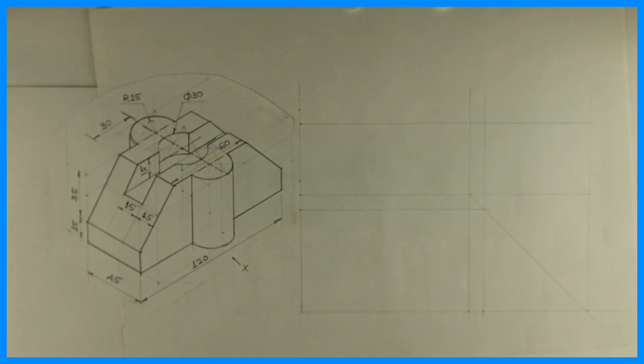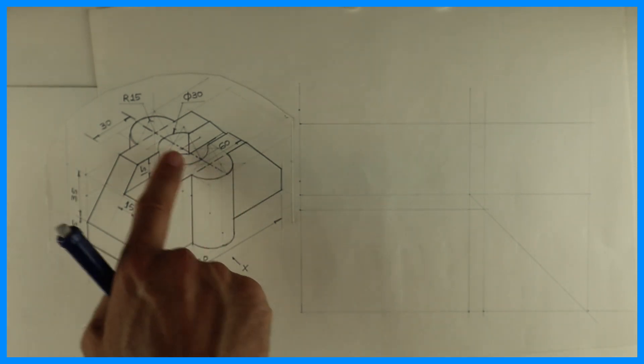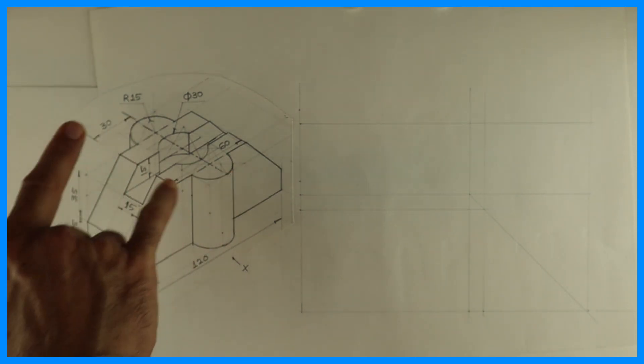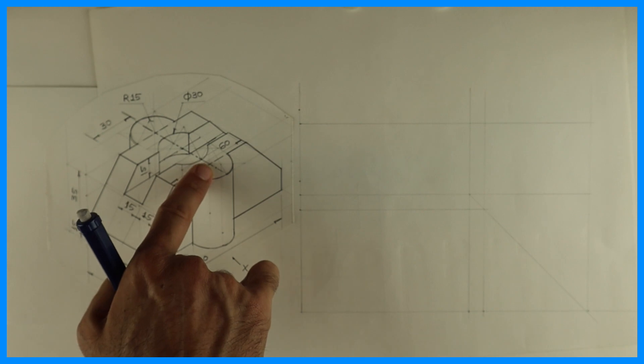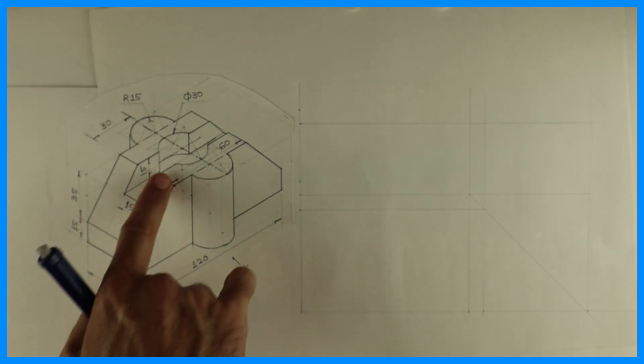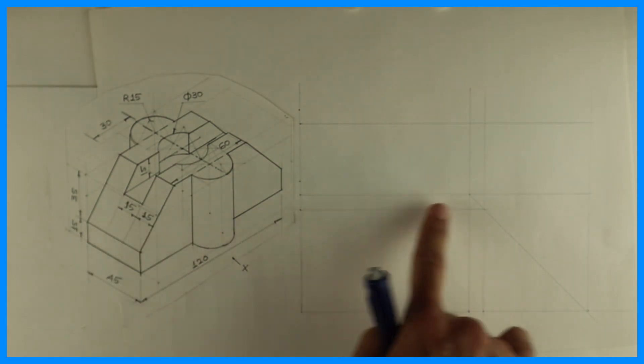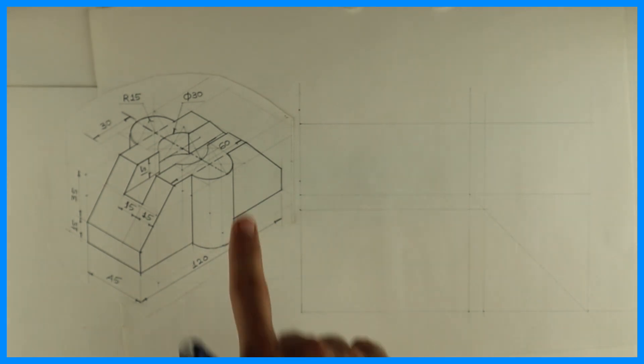Welcome to technical drawing. Today we are going to draw orthographic views of this sum. Length is 120, height is 50, and width is 45—no, actually it is 45 plus 15, 15 on both sides, so it will be 75. First we will draw the layout, then start with the top view.